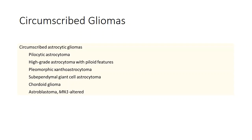Circumscribed gliomas include pylocytic astrocytoma, pleomorphic xanthoastrocytoma, high-grade astrocytoma with pyloid features, subependymal giant cell astrocytoma, cordoid glioma, and astroblastoma MN1 altered. The essential and desirable diagnostic criteria for circumscribed astrocytic gliomas according to CNS-WHO 5 will now be discussed entity by entity.